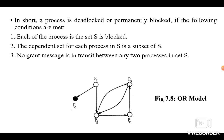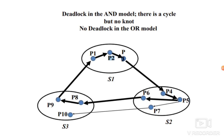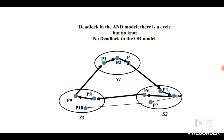This knot condition indicates deadlock in the OR Model. Looking at the diagram: there is a cycle P1 → P2 → P3 → P4 → P5 → P6 → P8 → P9 → P1. In the AND Model, a cycle implies deadlock. But in the OR Model, the cycle alone does not imply deadlock — here processes P5, P7, and P10 exist outside the cycle, so a grant message can be received from one of them to release the deadlock. Since there is no knot, we don't have a deadlock.